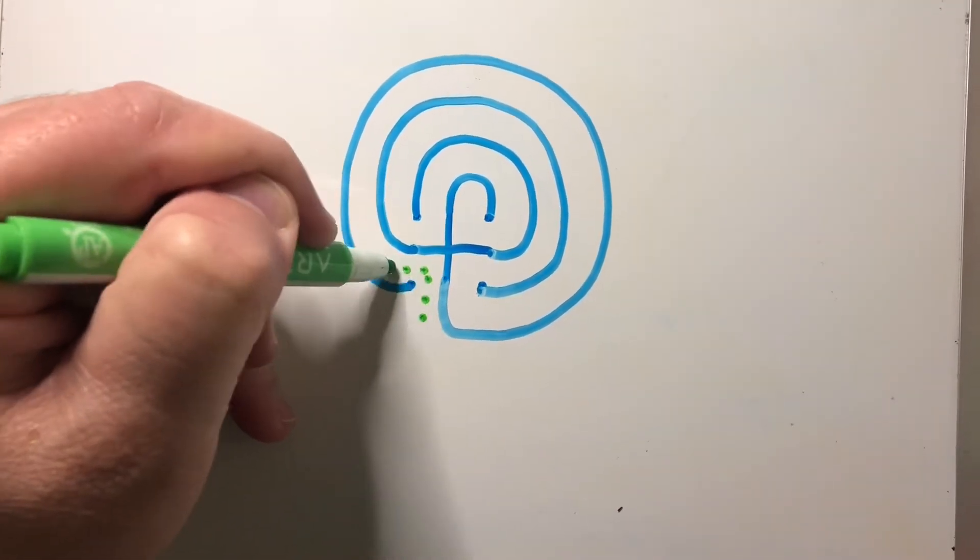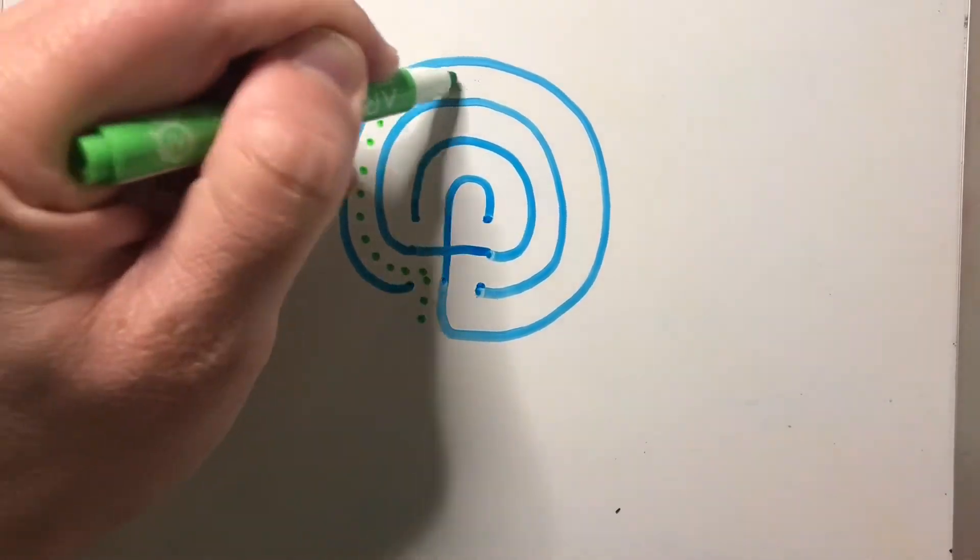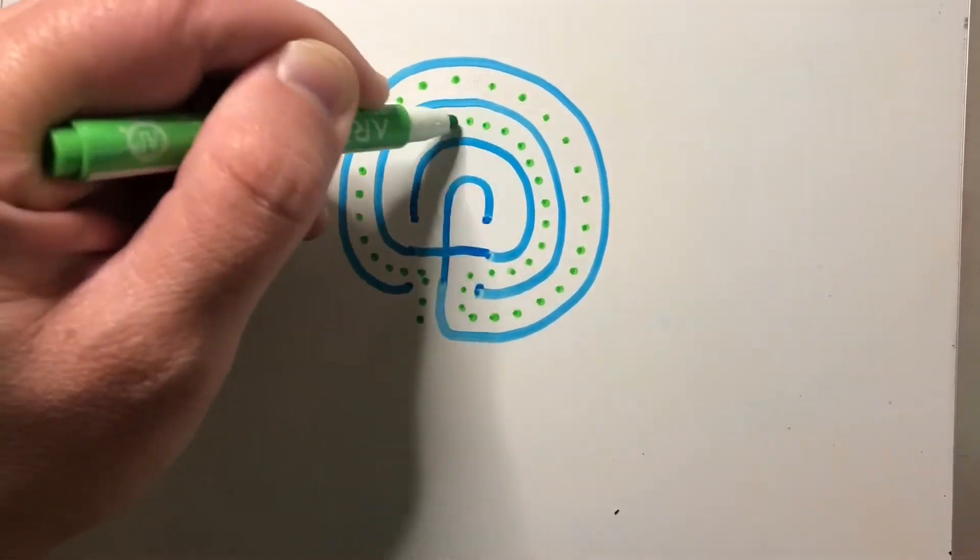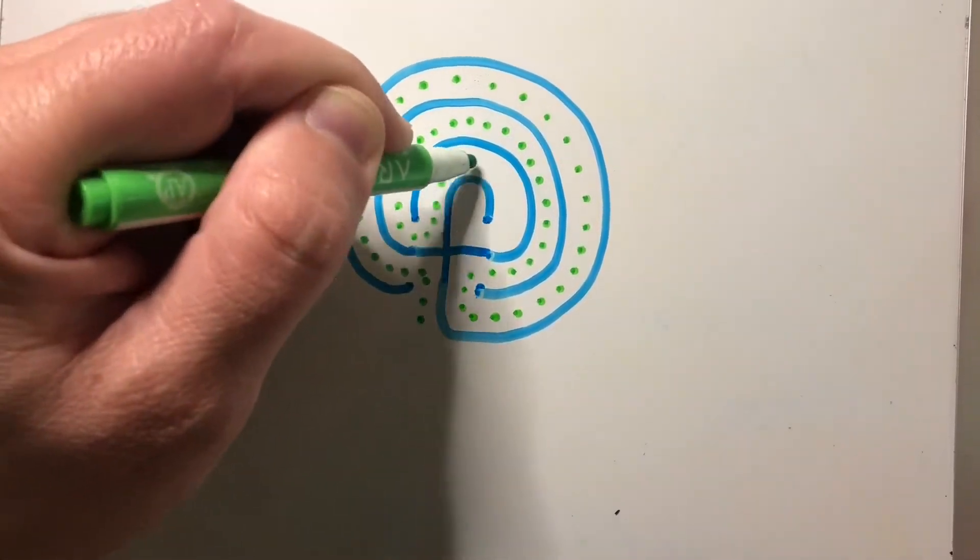And there's a simple labyrinth. I want to trace a little path in mine. You could just use your finger to follow the path, or come up with a different pattern. What kind of designs could you put in there?